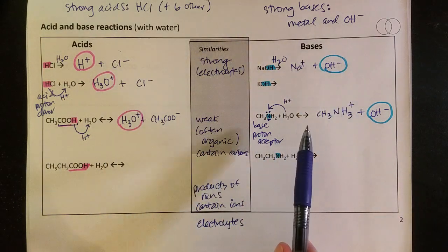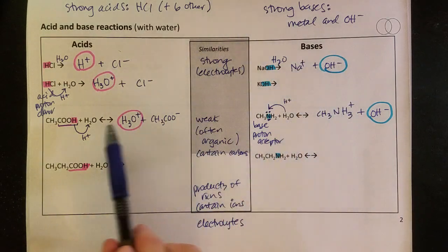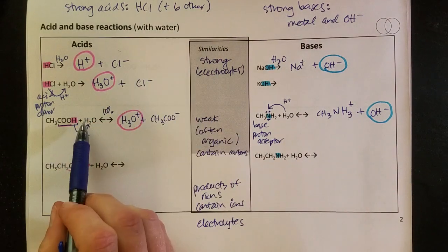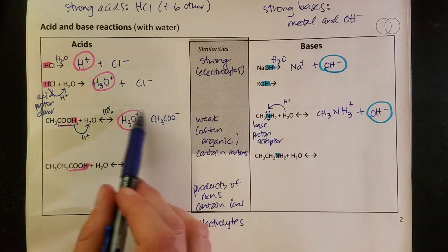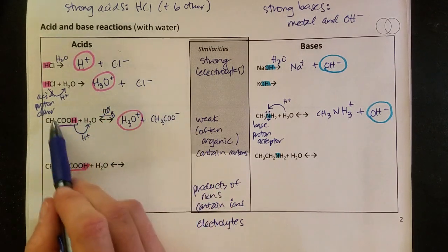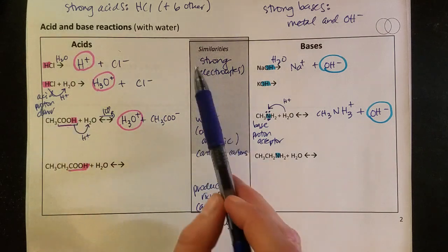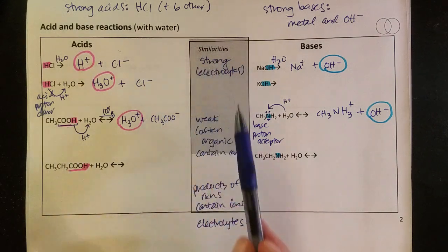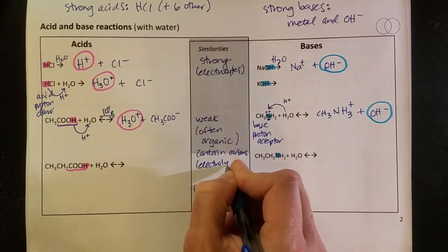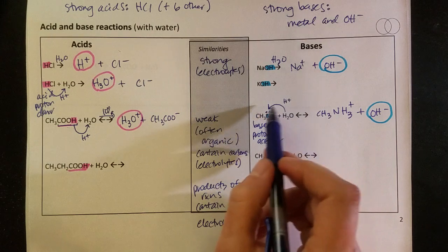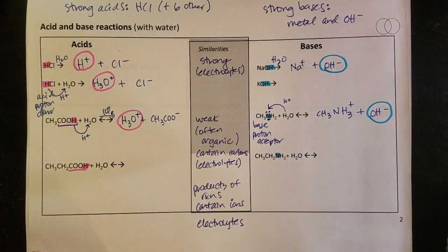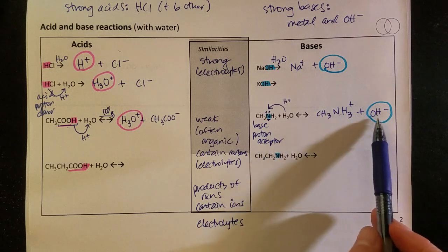Now a little detail here with the weak acid and the weak base. Notice I have the equilibrium arrows. So in reality, only about roughly 10% of this breaks up and forms ions, and the other 90% stays together as molecules. So up here I would call these strong electrolytes, and I would call these weak electrolytes, because they don't form quite as many ions. They actually tend to stay together as molecules, but then maybe one out of every 10 goes through this ionization to form ions here.